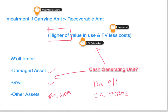The cash generating unit is the key technical point: a single asset on its own may not generate cash flows, so we couldn't do an impairment test. We put assets together until we get enough to generate cash — that's the cash generating unit. We then do the test, and if there is an impairment we write off those assets in order: damaged asset first, then goodwill, then the other assets. That's our summary of the basics of IAS 36 — core exam material.